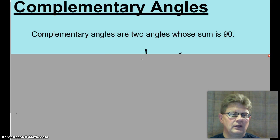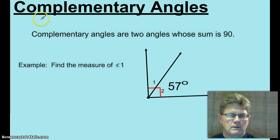Okay, let's get an example. Find the measure of angle 1. Okay, 1 and 2 are complementary because they have been drawn inside this right angle.